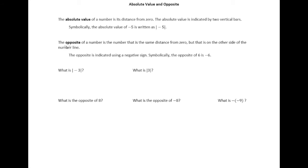The other term we want to define is the opposite. The opposite of a number is just the number that is the same distance from zero but that is on the other side of the number line. We're going to indicate the opposite of a number using a negative sign. So symbolically, the opposite of 6 is negative 6.